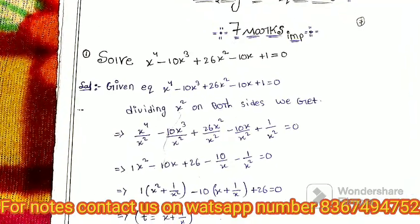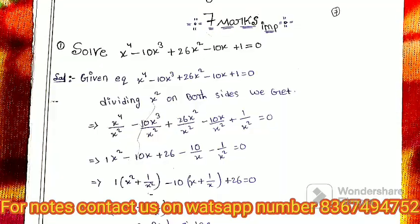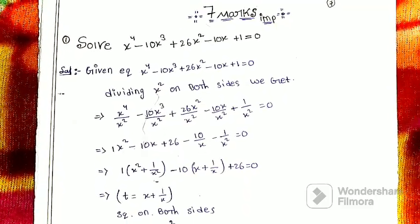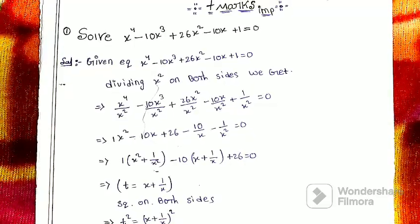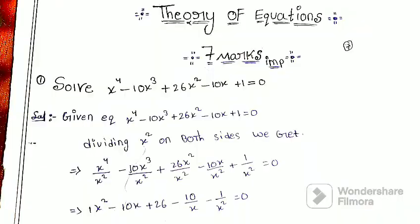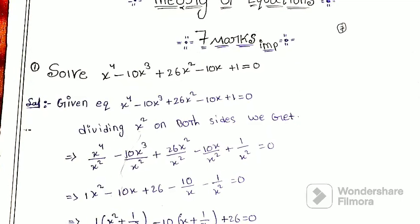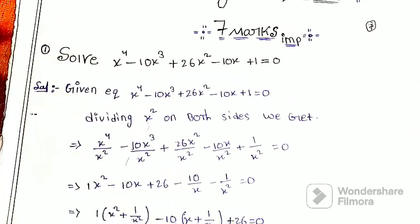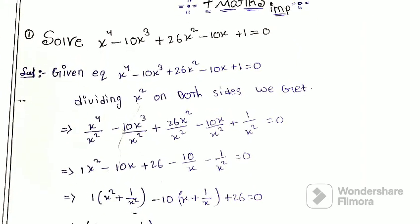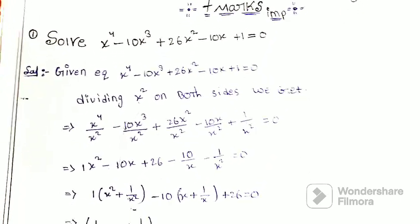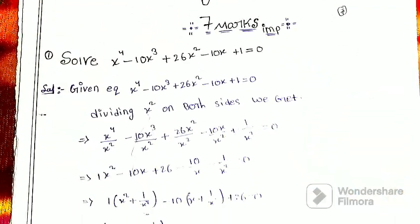If you are not in the notes, you will need to download the PDF from the link in the description. The solution is to solve x⁴ minus 10x³ plus 26x² minus 10x plus 1 is equal to 0. This is equation number one.